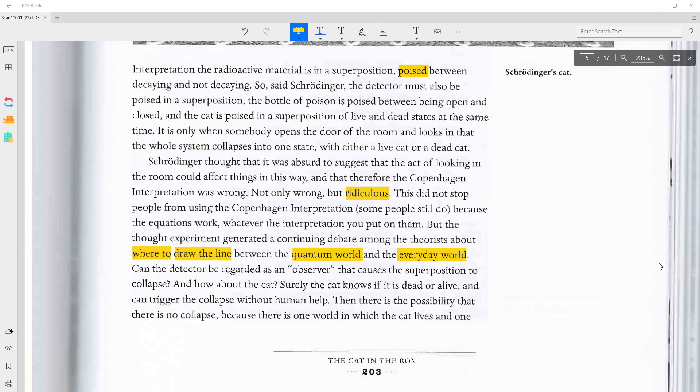Schrödinger thought that it was absurd to suggest that the act of looking in the room could affect things in this way and that therefore the Copenhagen interpretation was wrong. Not only wrong, but ridiculous. This did not stop people from using the Copenhagen interpretation. Some people still do because the equations work whatever the interpretation you put on them.